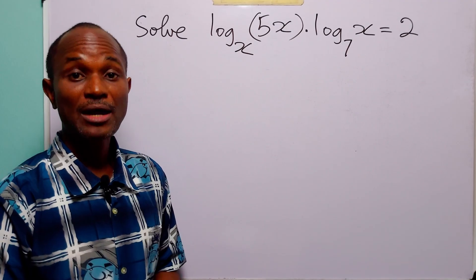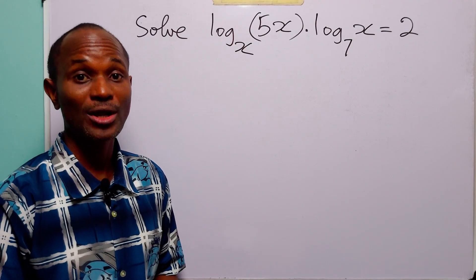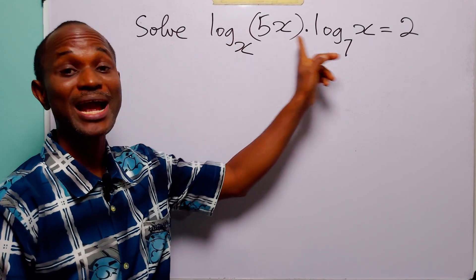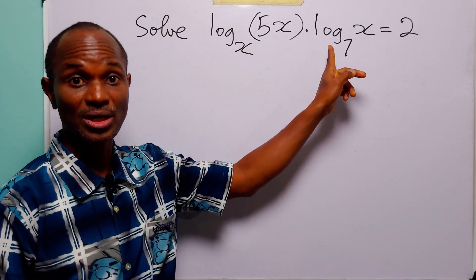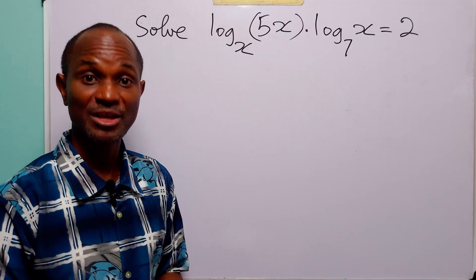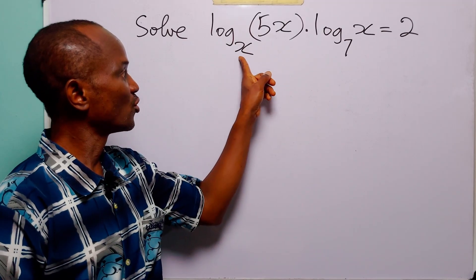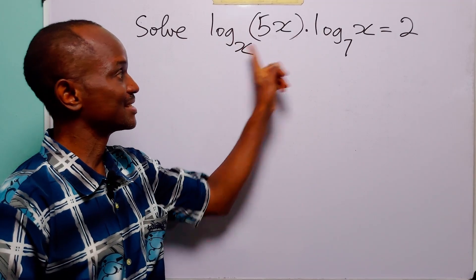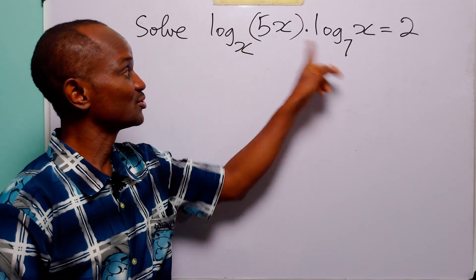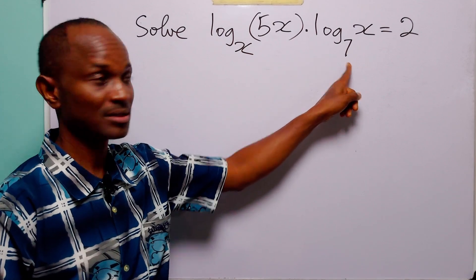In the second method, we don't need any fancy log identities or even to rearrange the equation. We simply use change of base. Since the unknown x is in the base, let us change these two terms to base 7.